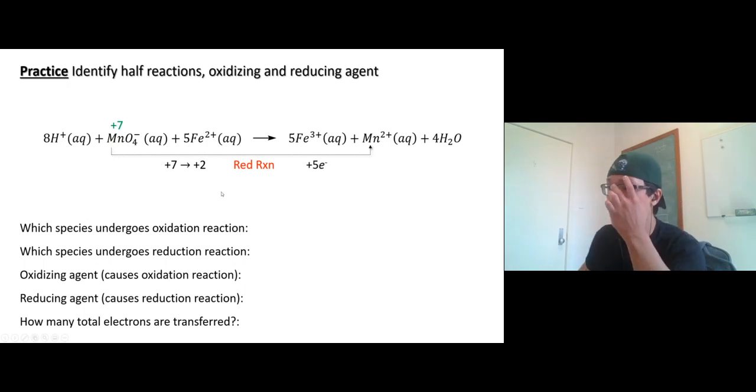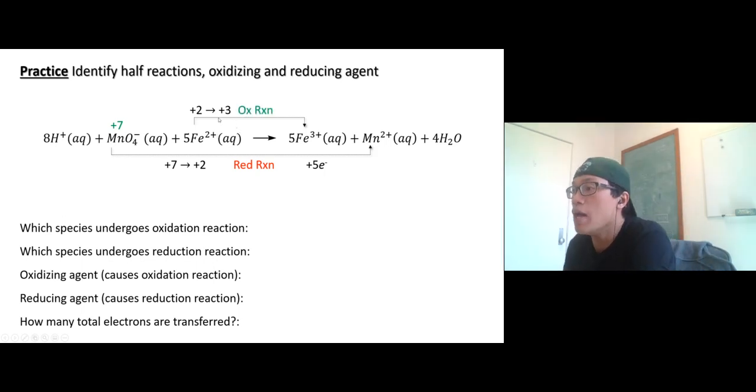The other one who loses electrons totally, obviously, is iron. So plus two to plus three. Two to three is increase in oxidation number. So we call this reaction an oxidation reaction, by definition. Each iron loses one electron. There are five of them, so that's five total. One loses five, the other one has to gain five. It has to be equal.